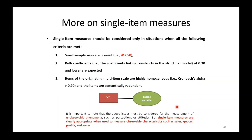Regarding single item measures, you can only consider these variables when all three criteria are met: number one, your sample size should be less than 50; number two, path coefficients of 0.3 and lower are expected; and number three, items of the originating multi-item scale are highly homogeneous — for example, Cronbach's alpha is above 0.9 and items are semantically redundant. Meeting all these criteria simultaneously is quite unlikely, and it is very difficult to publish a paper with a sample size of less than 50.